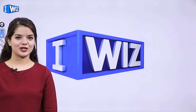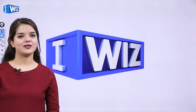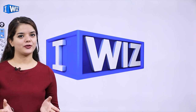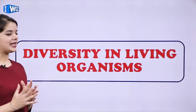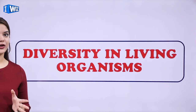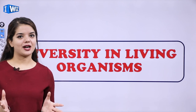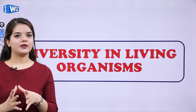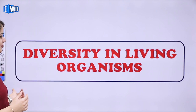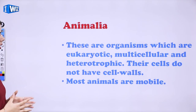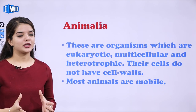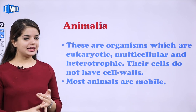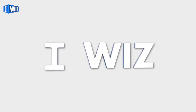Hello students, this is Harprevesh Kaur and today we will talk about Class 9 Biology. The topic for today is Diversity in Living Organisms. We have already covered the first part which included Plantae. Now we will talk about Animalia. These are organisms which are eukaryotic, multicellular, and heterotrophic.